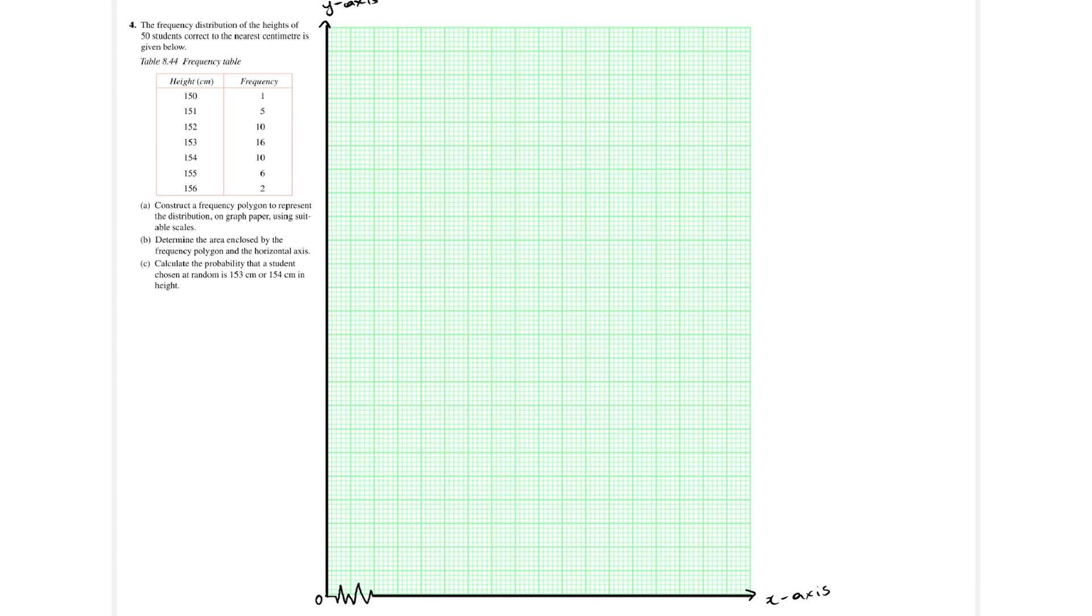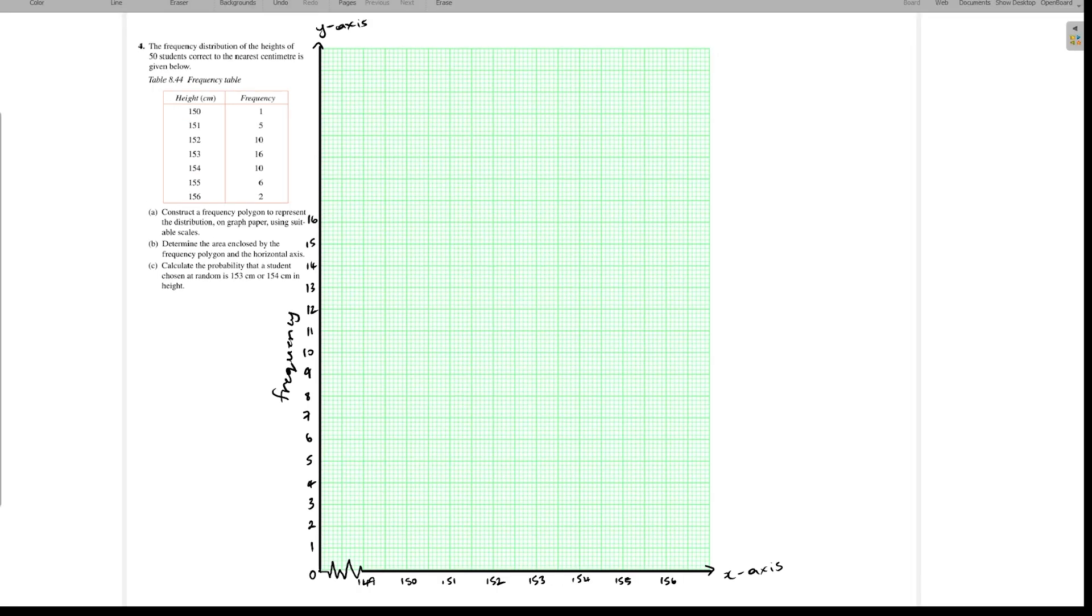On the y-axis we have the frequency. Frequency starts at 1 all the way up to 60, and always remember to label your axes. On the x-axis we're going to start at 149, and remember each 2 centimeters is going to represent 1 unit. So we have our representation on both axes. Now what's next is to plot the points. The first point in the table would be frequency of 1, height of 150 centimeters. So we locate the height, which is on the x-axis - height in centimeters.